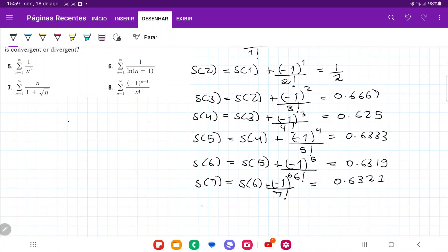Lastly, for S(8), we calculate S(7) plus (-1) to the power of 7 over 8 factorial. This is so close to 0.6321 that it has a few trailing decimals, but when we round it to four places, it gives us the same thing.